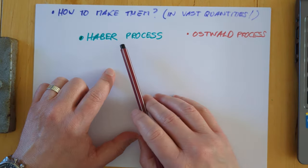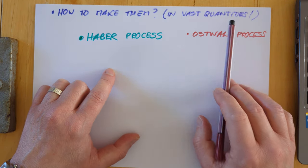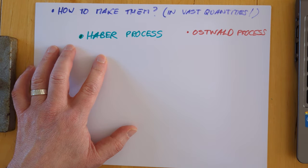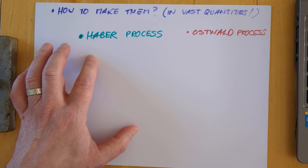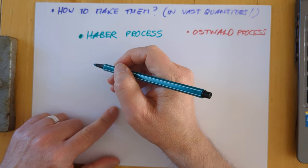Which takes us on to the second half of this video. How do we make these salts? We are required to know the details of two different processes here in vast quantities. In fact in 2023 the market for fertilizers across the entire planet was 193 billion US dollars. So yeah vast quantities indeed. Let's have a look at the details of the Haber process.